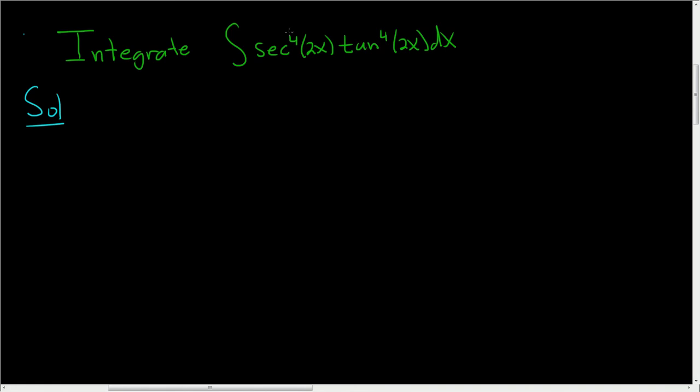So we have an even power of secant, so what we're going to do is save a copy of secant squared 2x. Whenever you have an even power of secant, this usually works. Now if you have an odd power of tangent, you would save a copy of secant tangent.